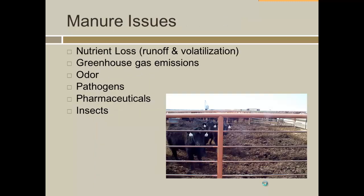Some of the manure issues that we deal with are, of course, nutrient loss — both runoff and volatilization. Volatilization is the loss by gas; ammonia is the one that comes to mind right away. Greenhouse gas emissions — methane, CO2, and nitrous oxide — can be released during various aspects of manure handling and application. Odor is a big one; that's where it impacts a lot of folks who are not involved in ag operations.